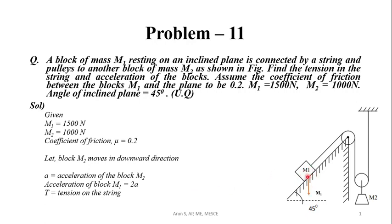The weight of M1 acts vertically downward. The perpendicular to the plane component will be M1 cos 45, and parallel to the plane component will be M1 sin 45.